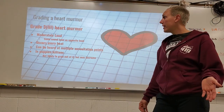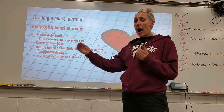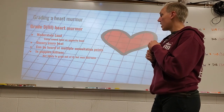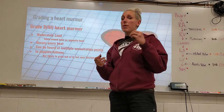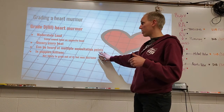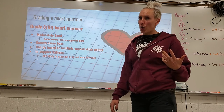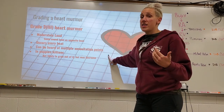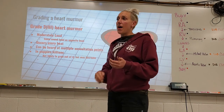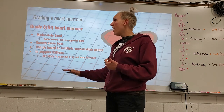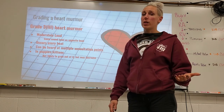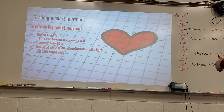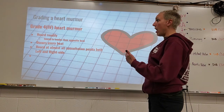Grade three heart murmurs are moderately loud — the sound level is roughly equal to the opposite heart beat. It can be heard at multiple auscultation points, though maybe not on both sides. Puppies and kittens likely won't grow out of a grade three, though it may decrease. In an older dog that previously had no murmur, a new grade three is concerning and may prompt medication consideration.